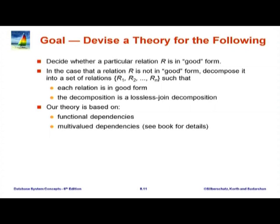Coming back to the theoretical side, we want a theory which decides whether a particular relation is in good form. If it is not in normal form, we decompose it into a set of relations such that each relation is in a good form. This reflects the history where people said: start with a single relation containing all attributes of interest from everything we want to model, and then break it up. We generally do not follow that direction today; we do ER modeling and end up with a set of small relations, but we can still apply the theory on the smaller relations we get. Our theory is based on functional dependency.